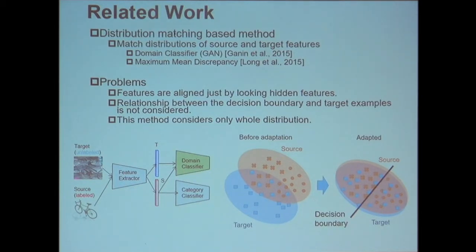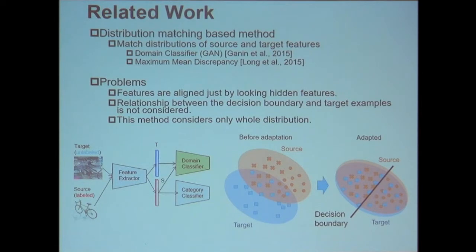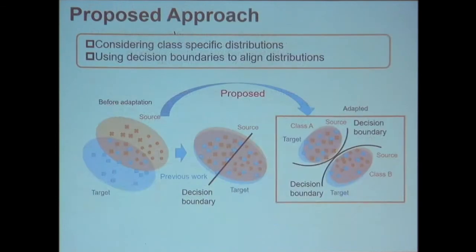The most related work in unsupervised domain adaptation uses a distribution matching approach. The feature generator tries to align the target distribution to the source distribution while keeping discriminative properties in the source domain, and the decision boundary separates classes in the source domain. However, there are problems: features are aligned by looking only at the features themselves, the relationship between the decision boundary and target examples is not considered, and only the whole distribution is considered without accounting for class-specific distributions.